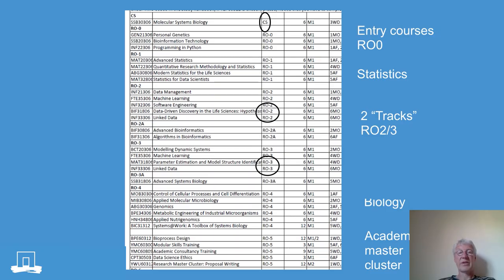This last slide is a screenshot from the study handbook showing the master bioinformatics program. In the study handbook you'll find more details about the content of the courses, and the handbook is available on the website of Wageningen University. This overview shows the two tracks described earlier and the courses that make up each track. More details about the program are available in the full presentation. Perhaps I will see you back in my role as study advisor in August, or later during an intake for the master bioinformatics program.